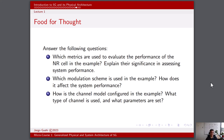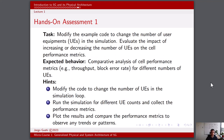You can answer your questions at your own time. There are two hands-on assessments that will help you better understand the concepts covered in this lecture. Task number one: modify the example code to change the number of user equipments in the simulation. Evaluate the impact of increasing or decreasing the number of UEs on the cell performance. The expected behavior is a comparative analysis of cell performance metrics, for example throughput and block error rate, for different numbers of UEs. Hints: modify the code to change the number of UEs in the simulation loop, run the simulation for different UE counts and collect the performance metrics, and plot the results to compare performance metrics and observe any trends or patterns.